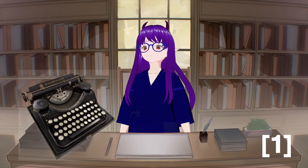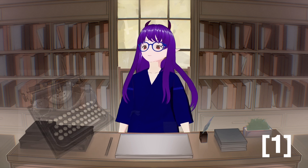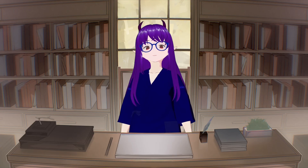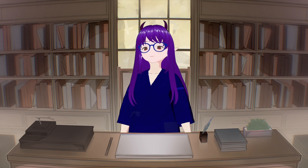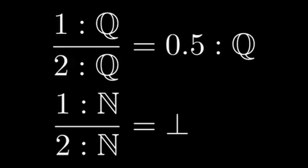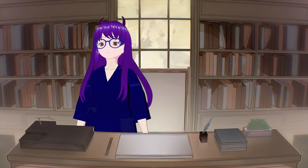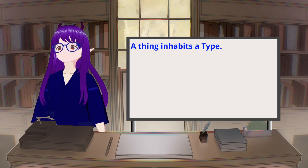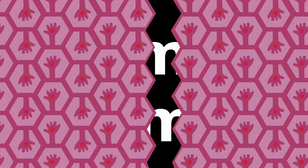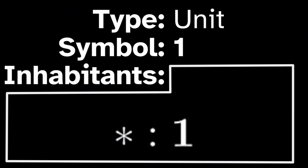In type theory, everything has a property called its type. An entity's type basically tells you what it is, and we write the type like this: the object, then a colon, then the object's type. An entity can only have one type, so the counting number one is a distinct object from the rational number one. We say an entity inhabits a type if that thing is of that type, and we say a type is inhabited if an object of that type exists.